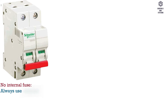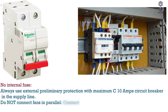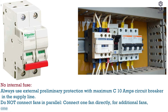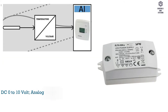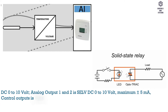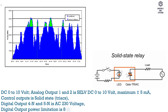Digital outputs rating: minimum 5 mA, maximum inductive 2 A. No internal fuse — always use external protection with a maximum C10 A circuit breaker in the supply line. Do not connect fans in parallel; connect one fan directly. For additional fans, use one relay for each speed. DC 0–10 V analog outputs 1 and 2: CLV, DC 0–10 V, maximum ±5 mA. Control outputs are solid-state TRIAC, digital outputs 4 and 5 at AC 230 V. Digital output power limitation is 8–300 mA, 3 A fast micro fuse — cannot be exchanged.